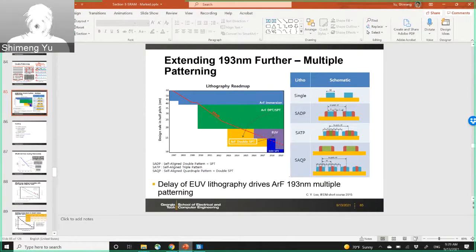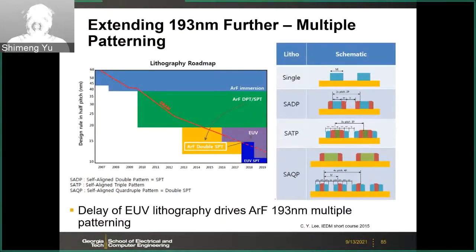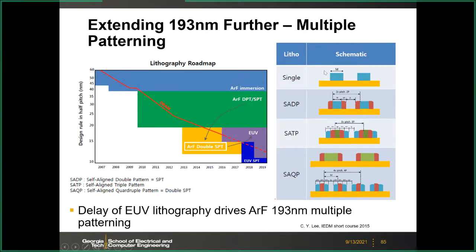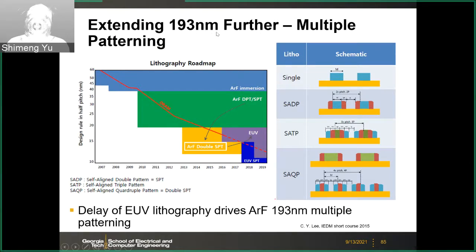Let's start from where we left in the last lecture. We talked about the challenges in lithography to pattern small features — the 193 nanometer lithography, which was the driving force for the past few generations from about 2010 to 2020. To effectively extend the capability of 193nm lithography, we use double, triple, and quadruple patterning to transfer patterns from larger dimensions down to small features using the spacer transfer technique.